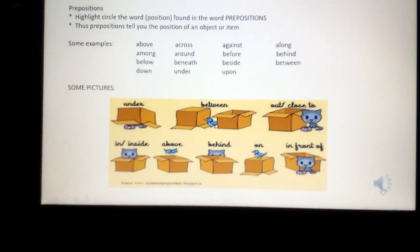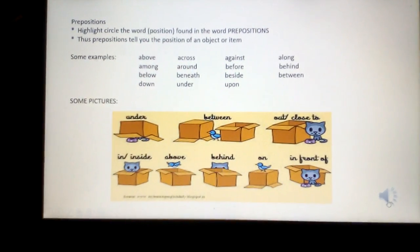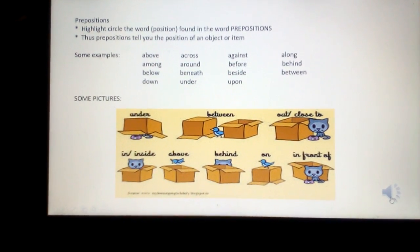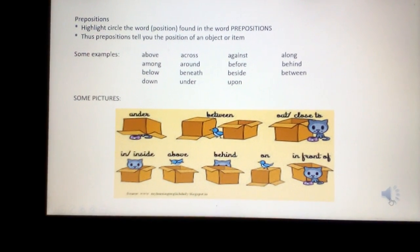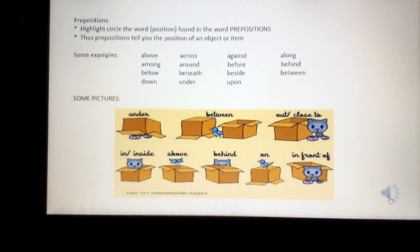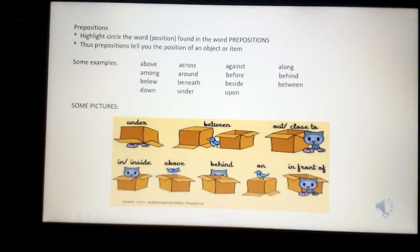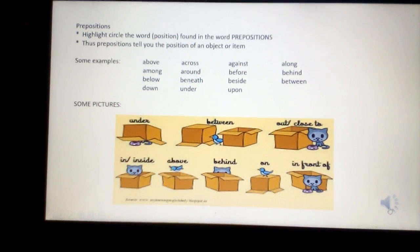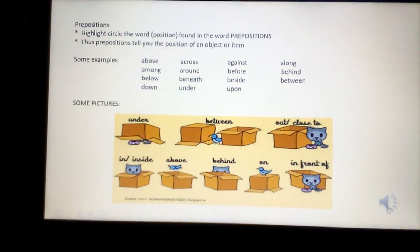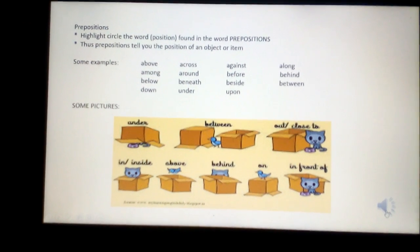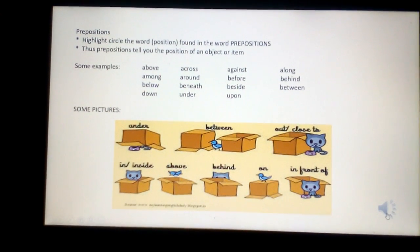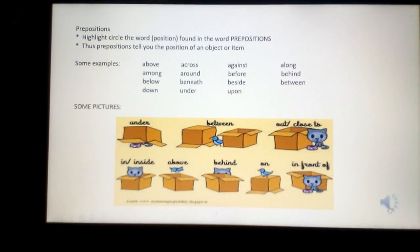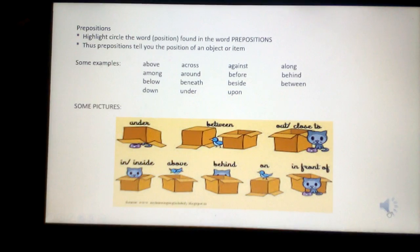Your next part of speech is prepositions. Highlight or circle the word 'position' found in the word prepositions. A preposition tells you the position of an object or item. A few examples: above, among, below, down, across, around, beneath, under, against, before, beside, upon, along, behind, between. And at the bottom, a few pictures to illustrate.